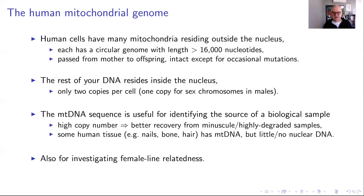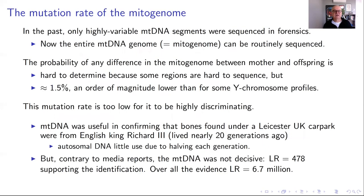Some human tissue — for example nails, bone, and hair — has mitochondrial DNA but little or no nuclear DNA. Given the inheritance pattern, mitochondrial DNA is useful for investigating female-line relatedness. Mainly, though, I'm talking about identification of individuals from the mtDNA sequence, and key to this is the mutation rate of the mitochondrial genome.